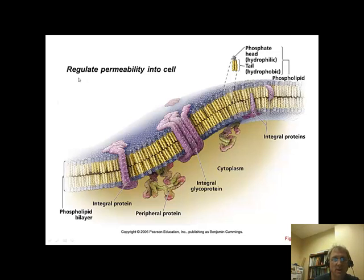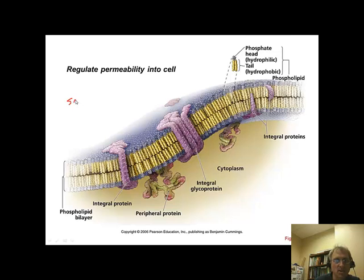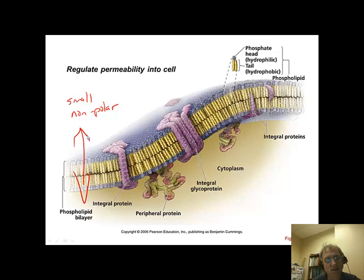The function of a membrane is to regulate permeability in the cell. It helps to keep molecules that are ionic, charged, or hydrophilic, or large from moving in and outside of the cell easily. Molecules that are small and non-polar are able to move freely in and out of the cell through the process of free diffusion from an area of high concentration to an area of low concentration. An example of a small non-polar molecule able to freely move across this membrane is molecular oxygen.